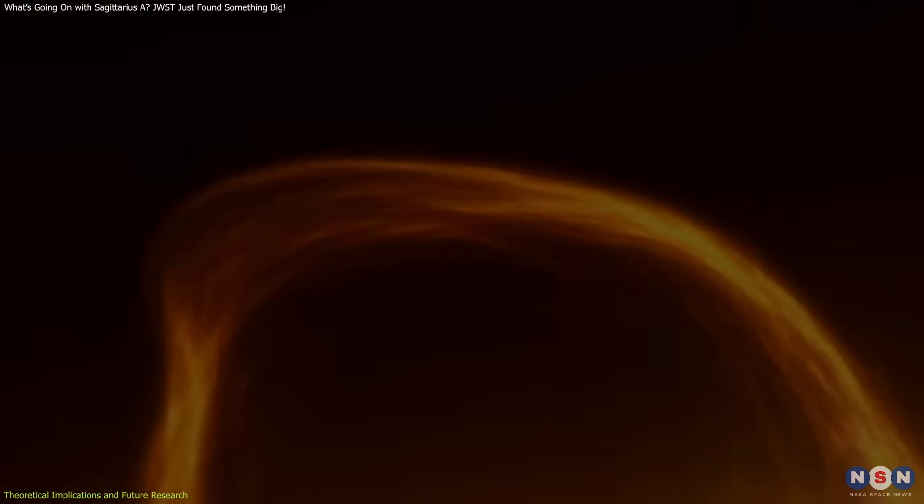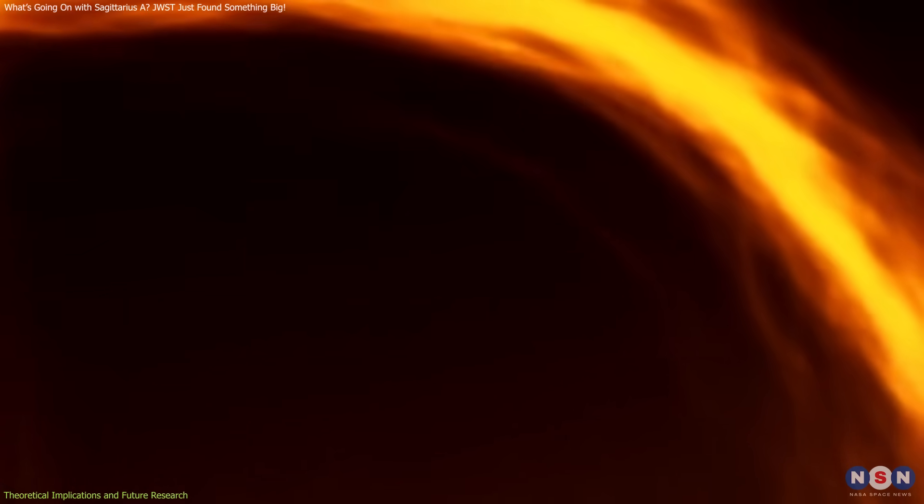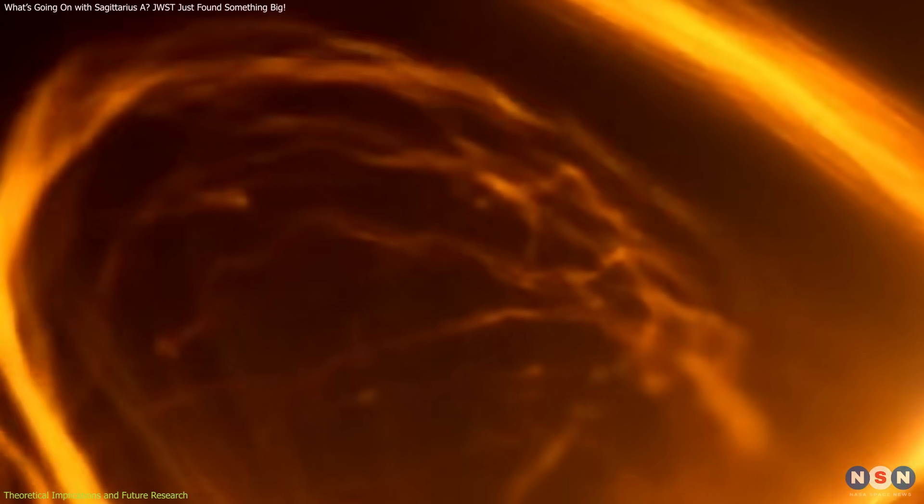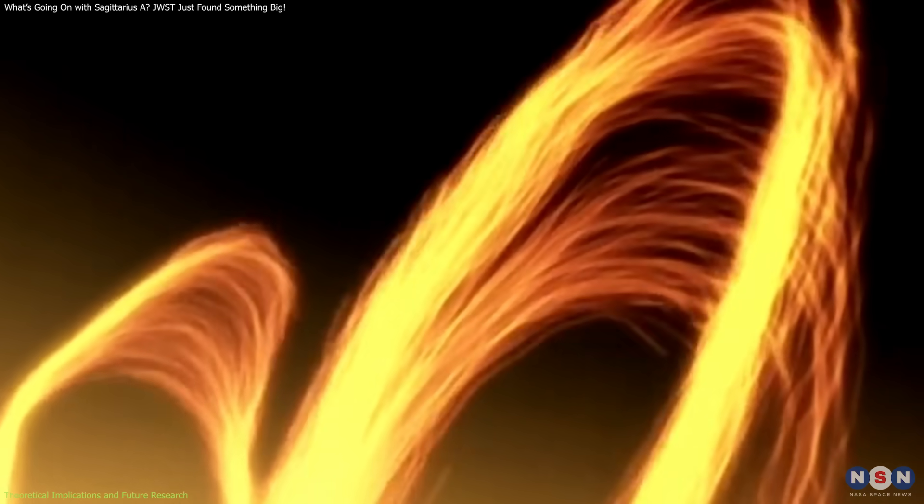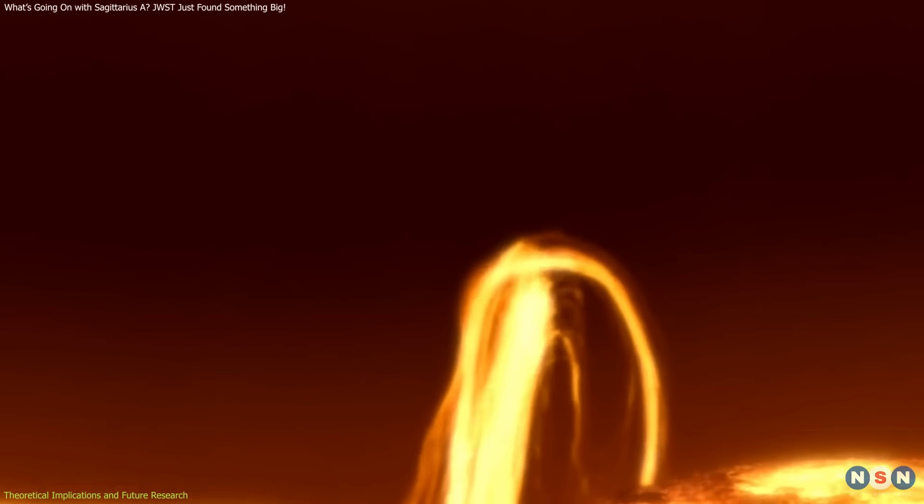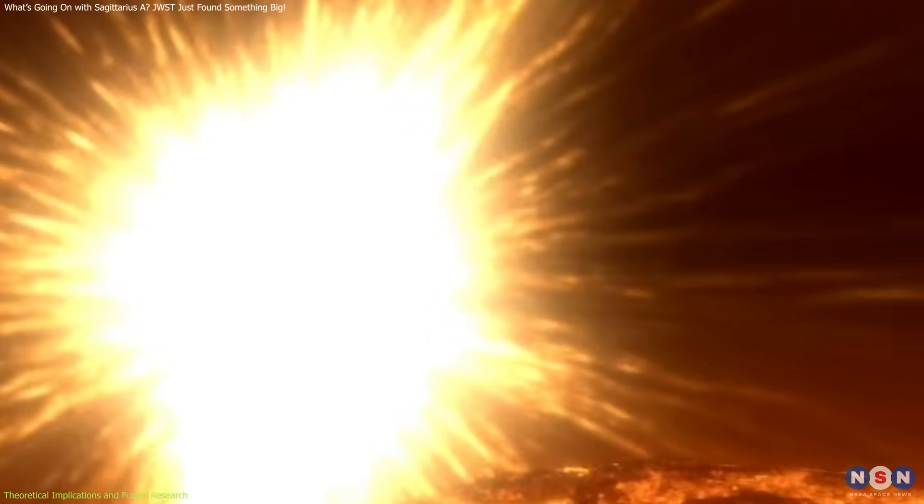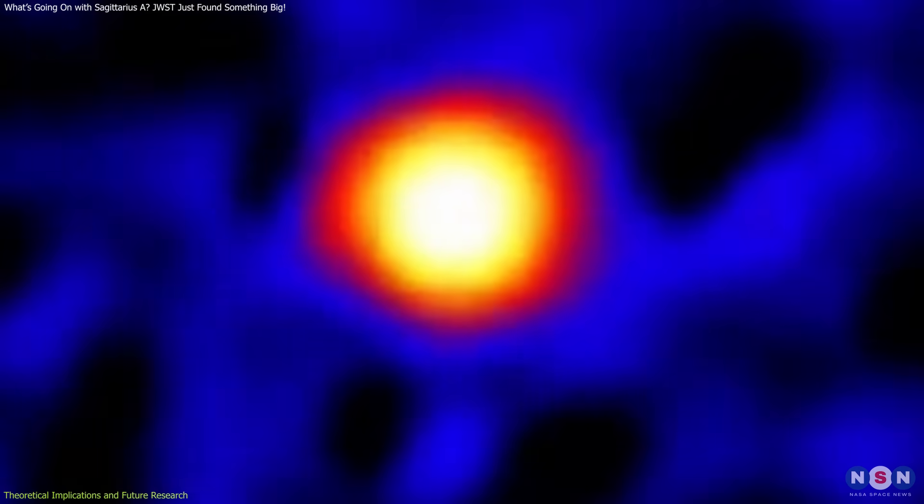One of the foremost considerations is identifying the mechanisms driving the observed flares. Current hypotheses suggest that these flares result from magnetic reconnection events within the black hole's accretion disc. In this scenario, tangled magnetic field lines within the turbulent disc realign and snap, releasing vast amounts of energy in the process. This mechanism, akin to solar flares but on an immensely larger scale, could explain the bursts of high-energy radiation detected around Sagittarius A-star.